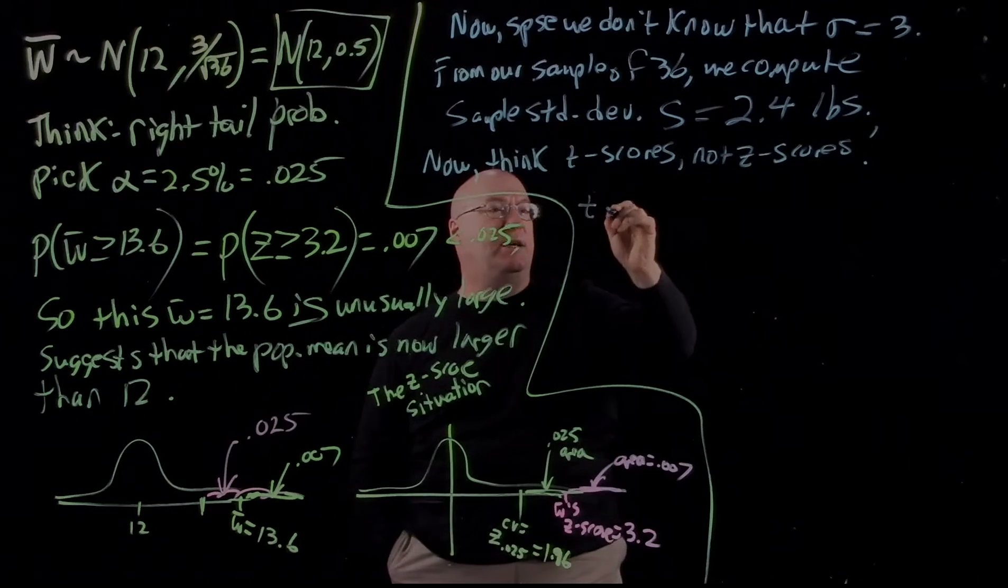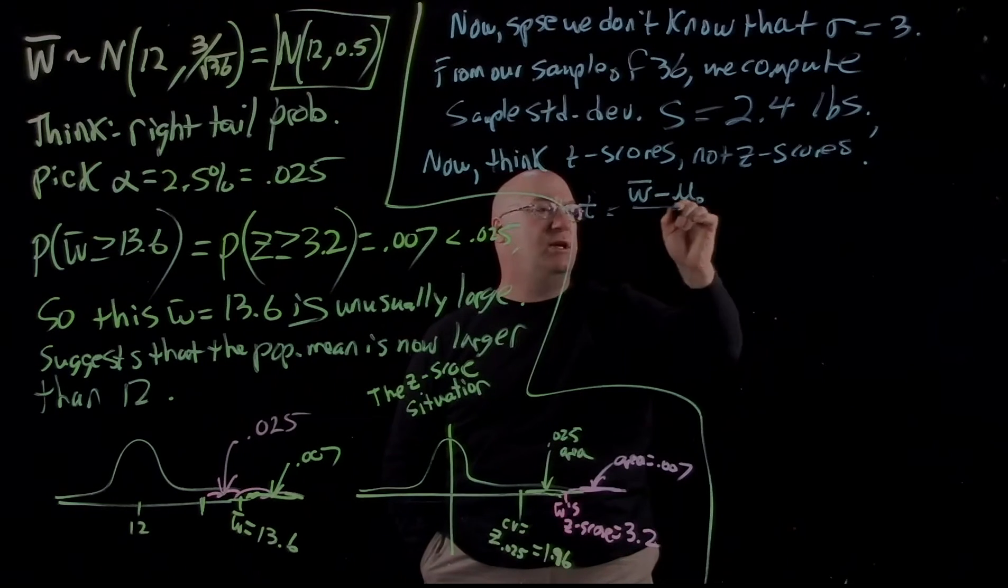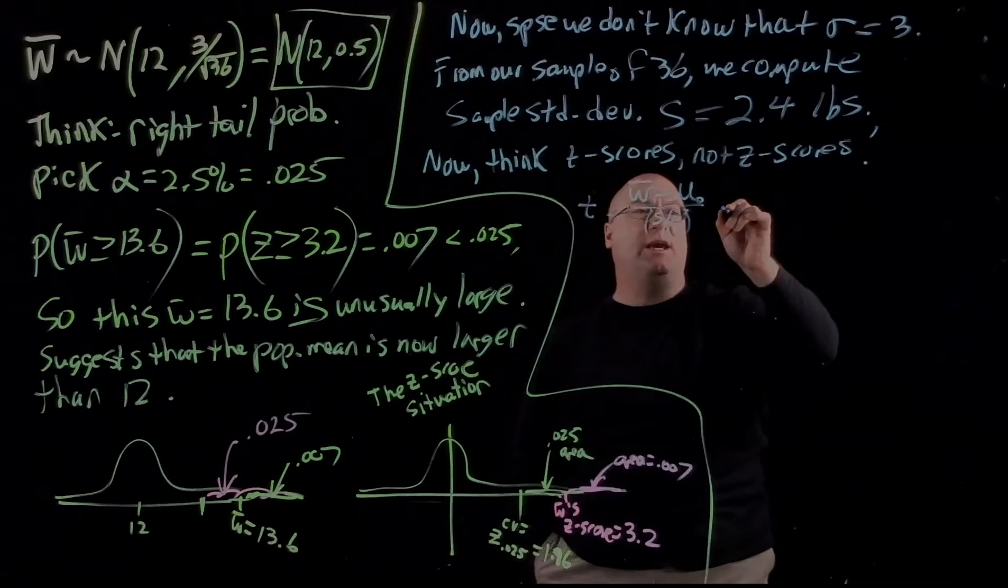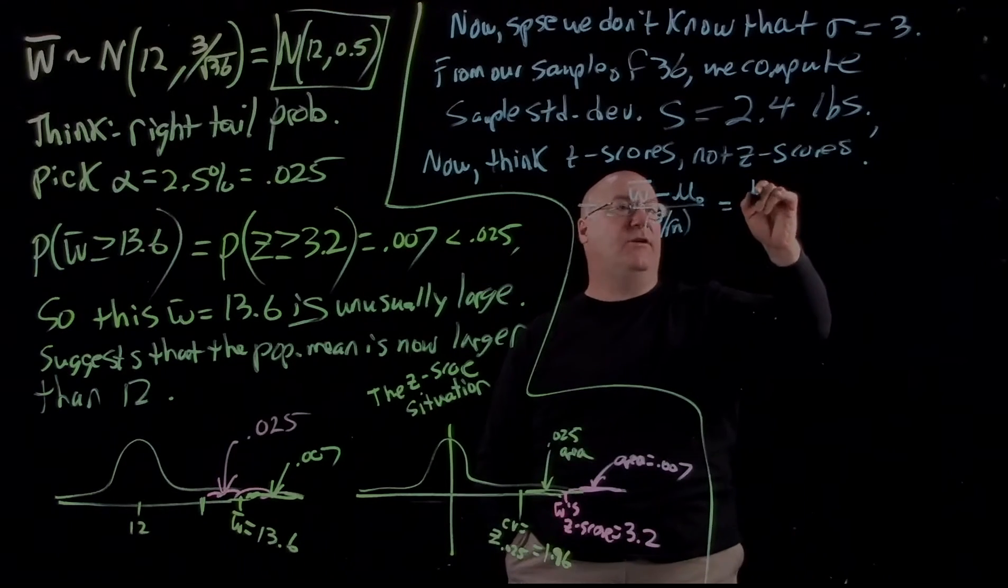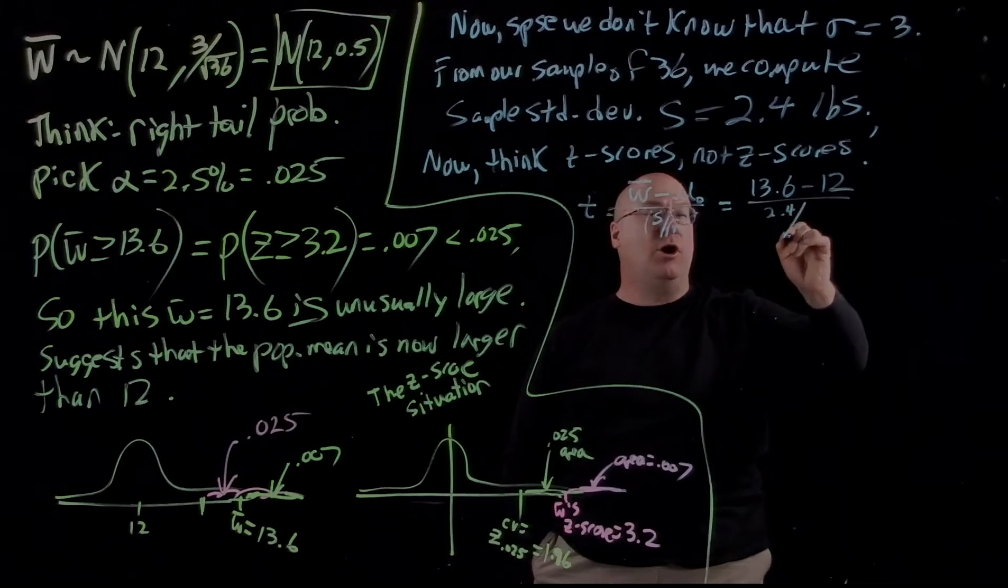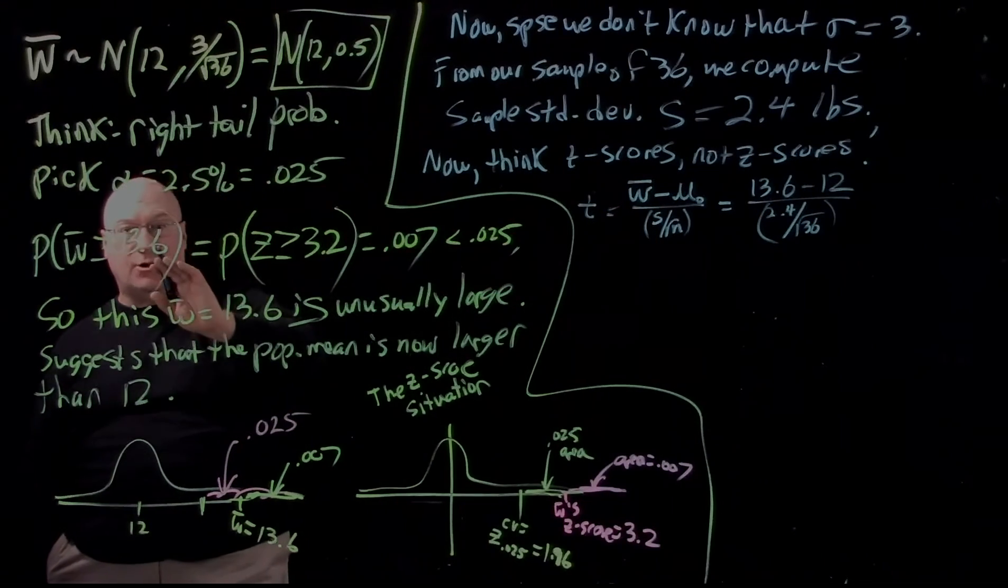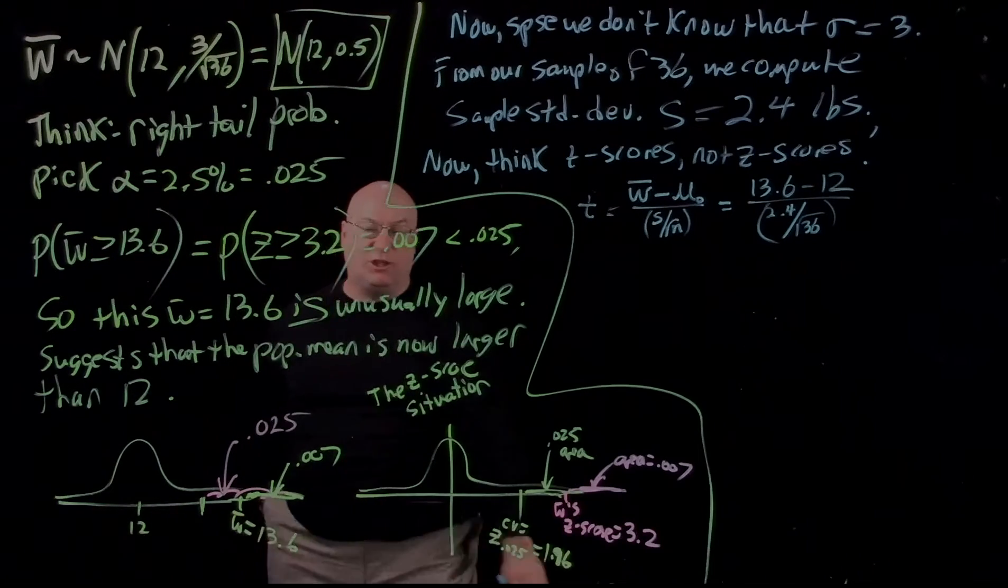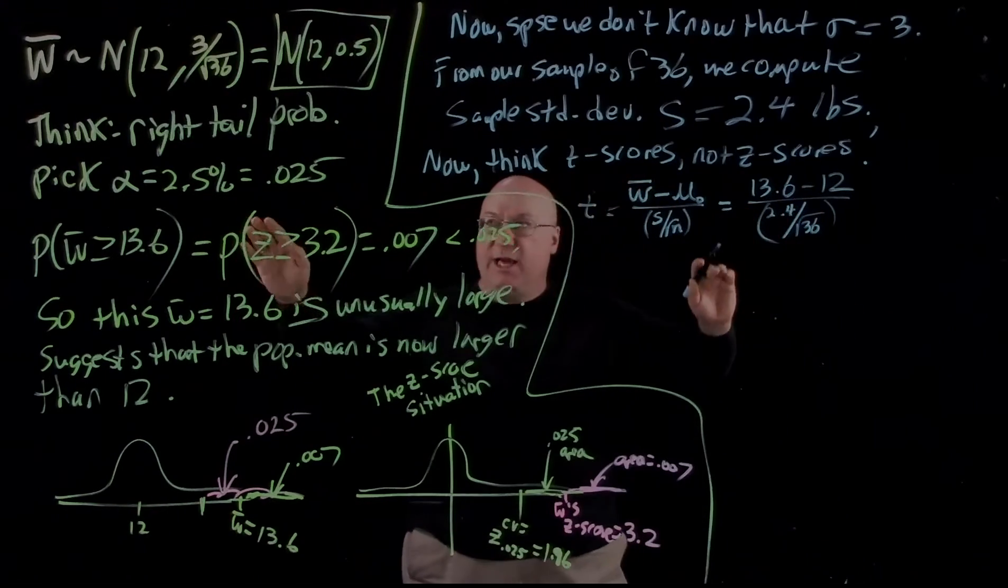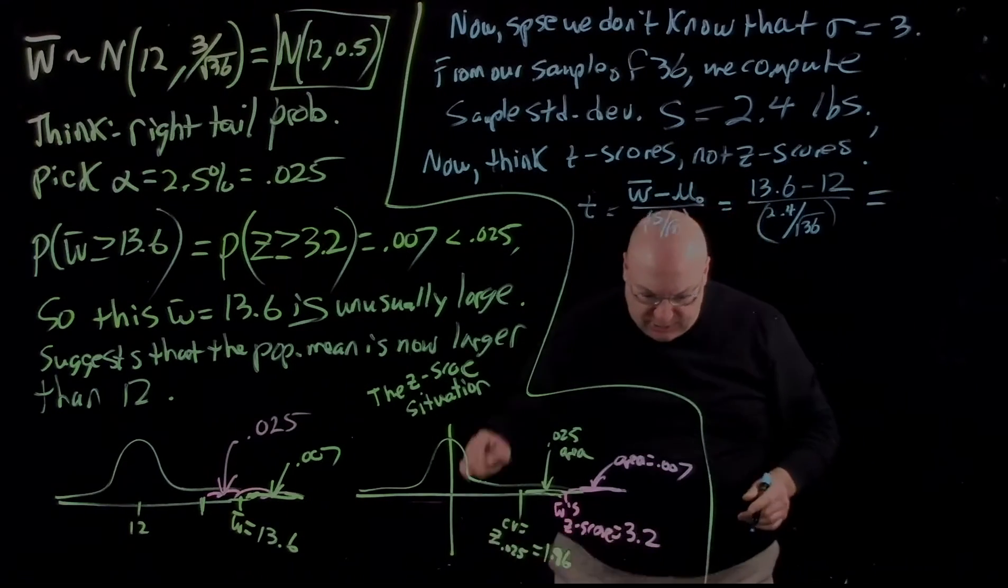And what's the T-score again? T is W bar minus our original mu divided by S over the square root of N. And so what we get is W bar is 13.6 minus 12 divided by 2.4 over the square root of 36. All of that for Z-scores was over here. I didn't do it because you've done it so much in the past. But you had to do that calculation, almost this calculation. It's just that you were dividing by sigma over the square root of N instead of S over the square root of N.